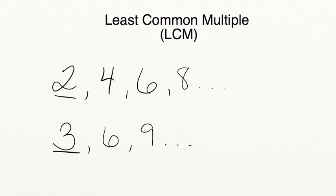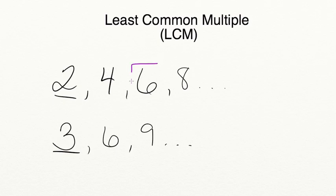So the least common multiple is when you're comparing two numbers — in this case two and three — and you're looking for a multiple that they have in common which is the smallest. Two and three don't share the multiples two or three. Moving to four, two has a multiple of four but three does not. Moving to six, both two and three have multiples of six, and that's the smallest multiple they share. So the least common multiple for two and three is six.